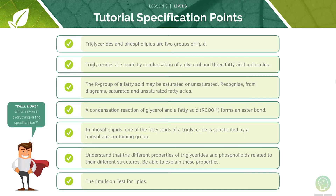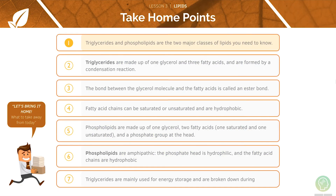We've now covered all the specification points for this lesson. Let's go through our take-home points for this video. Triglycerides and phospholipids are the two major classes of lipids you need to know. Triglycerides are made up of one glycerol and three fatty acids, and they are formed by a condensation reaction. Ester bonds are formed between glycerol molecules and fatty acids. Fatty acids are hydrophobic. We looked at phospholipid structure and how they form a bilayer. Finally, triglycerides are mainly used for energy storage.